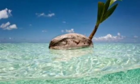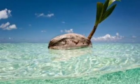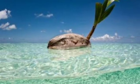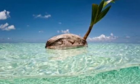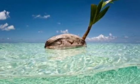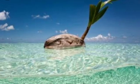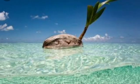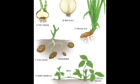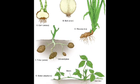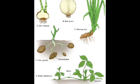Seeds can also be dispersed by water. For example, if you have a coconut, it can be dispersed by water. Plants can also reproduce through vegetative propagation using roots, stems, and leaves, and from these a new plant will grow.